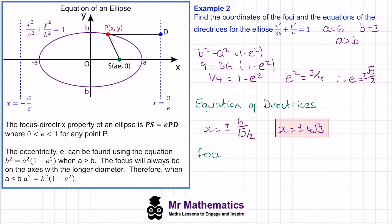Finally, for the foci we use the coordinates (plus or minus ae, 0). With a equal to 6 and e equal to root 3 over 2, and simplifying — 6 divided by 2 gives 3 — the foci have coordinates (plus or minus 3 root 3, 0).